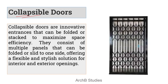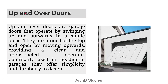Next is collapsible doors. Collapsible doors have multiple panels that can be folded or slid to one side, offering a flexible and stylish solution. The main members are connected with braces and joints or hinges. When pushed, all members stack together vertically, opening up a large clear area for movement. These types of doors are not commonly used in new buildings nowadays.